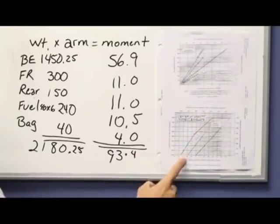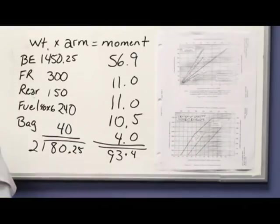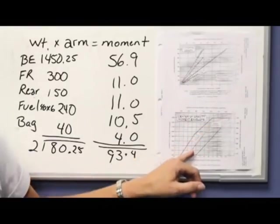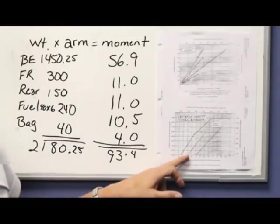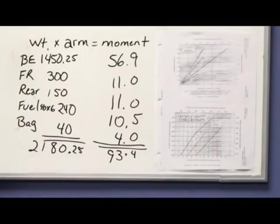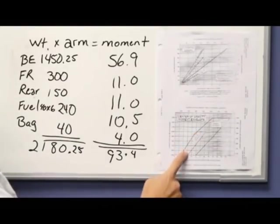Now notice we have a normal category and a utility category. The difference in these two categories is how much load factor the airplane can handle, or how much weight the wings can support. If we're in the normal category, the airplane can handle positive 3.8 Gs and negative 1.52 Gs. If we're in the utility category, the airplane can handle a positive 4.4 Gs or a negative 1.76 Gs. So if you wanted to do maneuvers such as spin entry and spin recovery, your manual says that you need to be in the utility category, but anywhere in here for normal flight conditions works great.